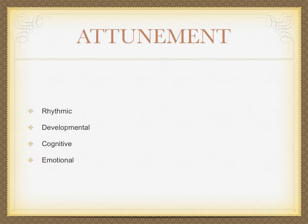Attunement, the second method, has four different levels: rhythmic attunement, developmental attunement, cognitive attunement, and emotional attunement.